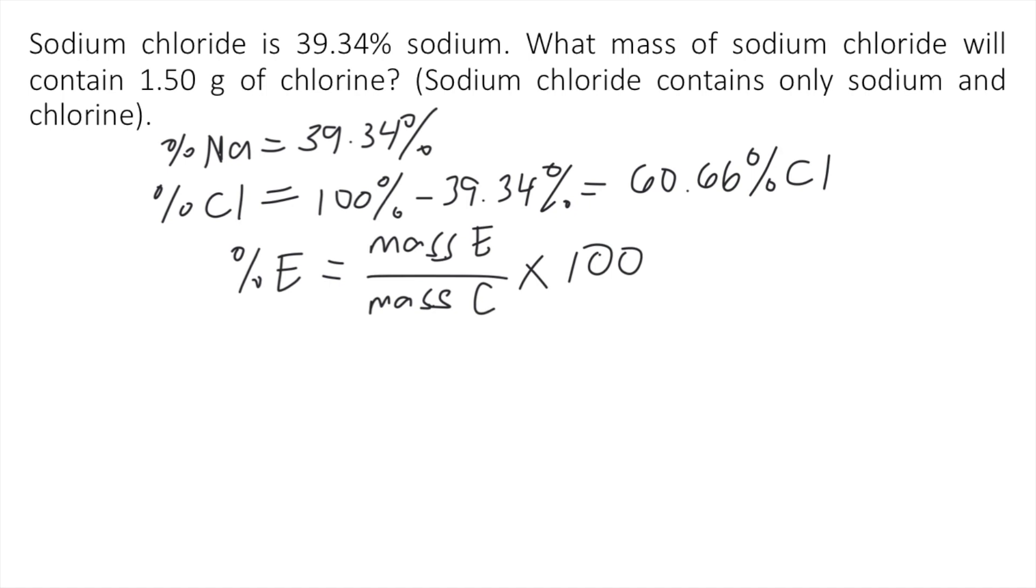Now in the problem, we are given, we already know the percent of the element because in the problem, the element we are concerned about is chlorine. So the percent of chlorine is 60.66%, which we already solved a while ago.